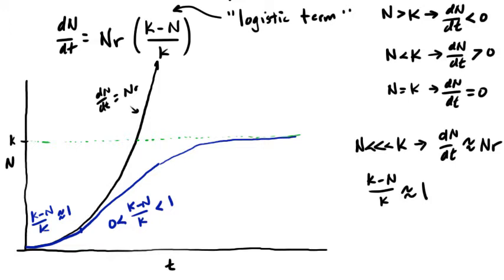As n starts to approach the carrying capacity, (k-n)/k approaches zero, as does dn/dt. There is an asymptotic approach to the equilibrium where n is equal to k. (k-n)/k is called the logistic term, and this formulation of density dependent population dynamics is sometimes referred to as logistic growth, giving you a sort of S-shaped curve rather than the J-shape of exponential growth.